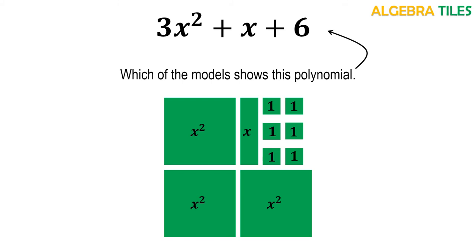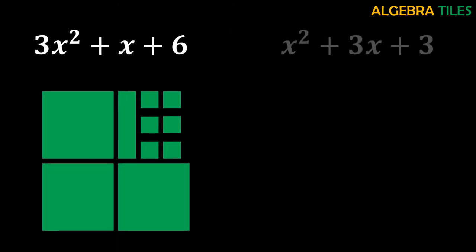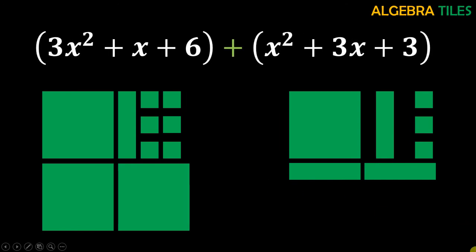Here is the first polynomial which we have already modeled. Taking another polynomial, we can model it the same way: it has x squared so we take 1 x squared tile; we need 3x so we take 3 x tiles; and we need plus 3 so we take 3 ones tiles. We now have both models. Since we are supposed to add them, and addition means combining both polynomials, we need to combine both models. I am rearranging them like this.